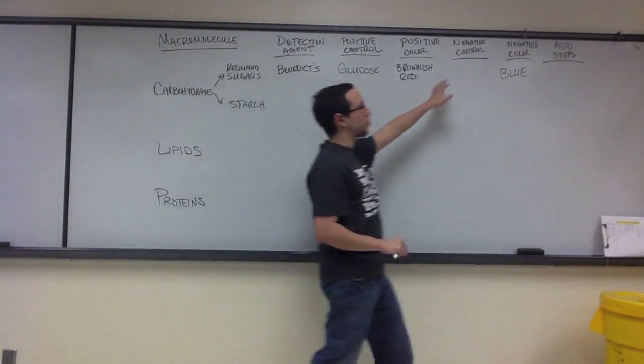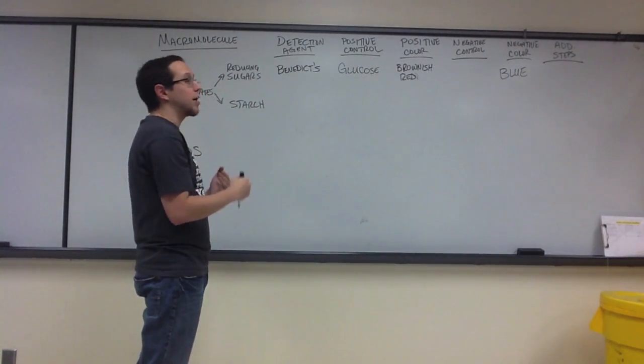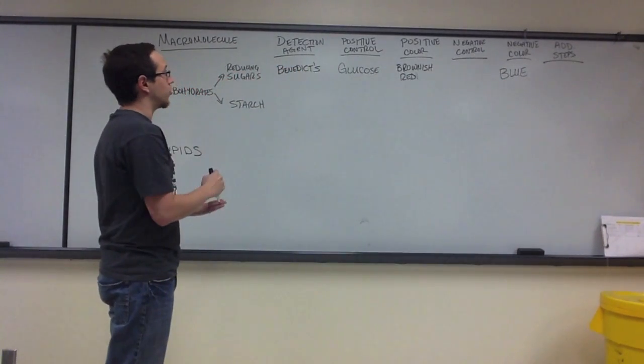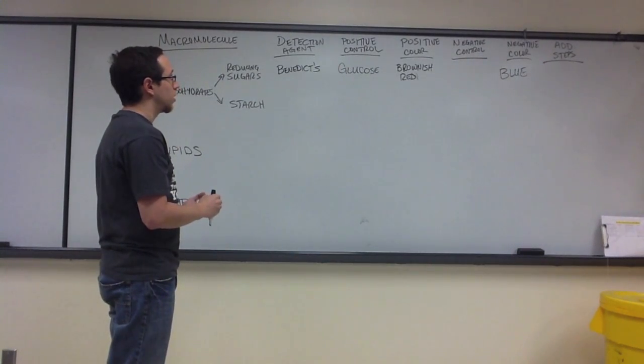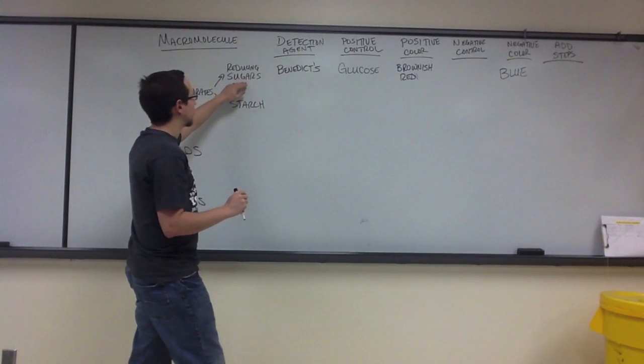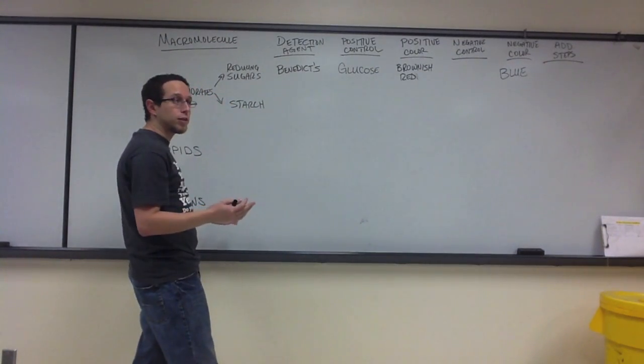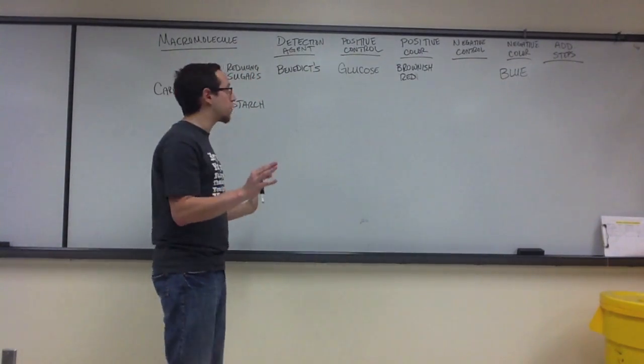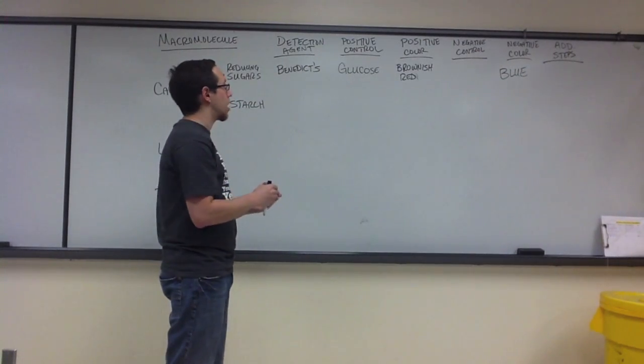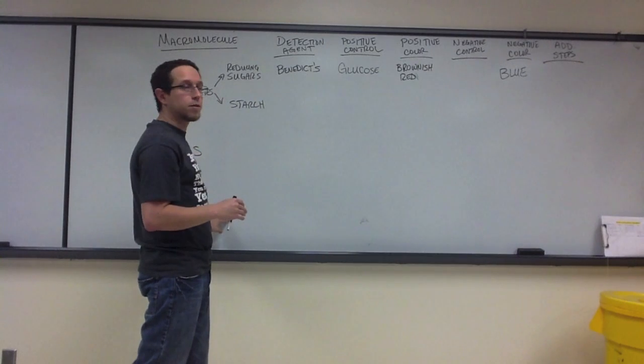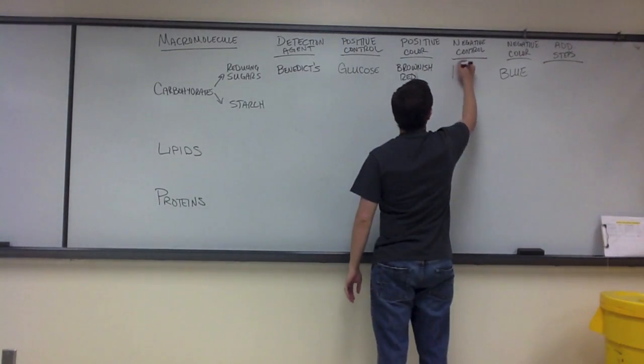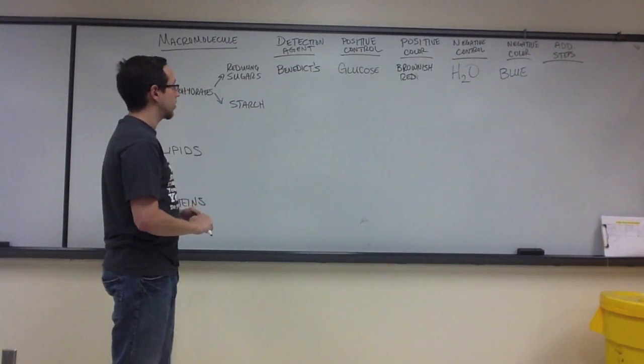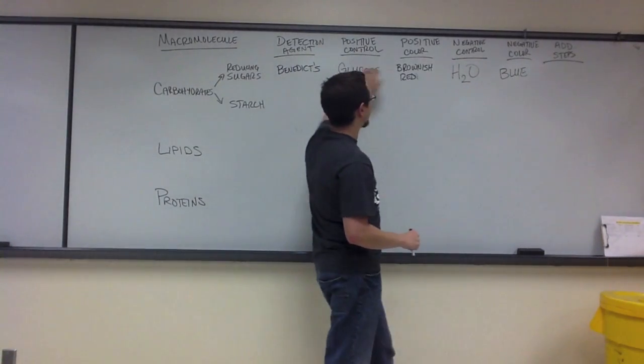Now, for your negative control, your negative control is similar to your positive control, except it's something that we know will always test negative and will always give us that negative result. So, thinking about what could have been your negative control, what solution do we know does not contain reducing sugars, starch, or proteins? The solution you should have come to was water. Water is a great negative control.